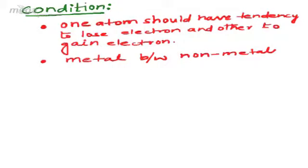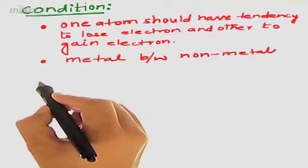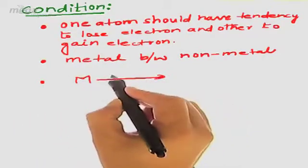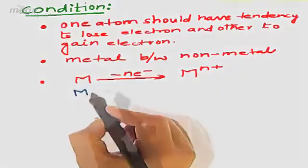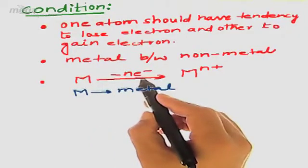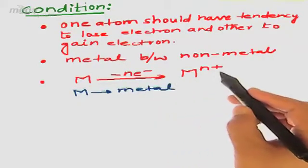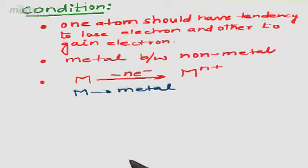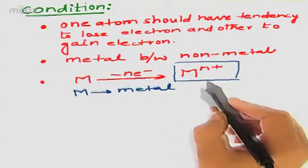Now let us see what processes are involved during ionic bonding. As already discussed in the definition, in ionic bonding the metal undergoes the loss of electrons, due to which it becomes M^n+, where M represents a metal. After the loss of N electrons, the metal converts into M^n positive. Why M^n positive? Because after the loss of N electrons, the N protons will be greater than the electrons, so the metal will carry a charge equal to n positive.